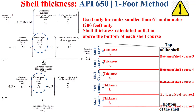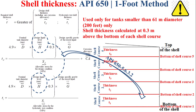The design liquid level h is the height from the bottom of the considered shell course to the top of the shell, so this design liquid level will vary depending on the considered shell course. For example, to determine the thickness t1 for shell course 1, we use h1, which is the height from the bottom of shell course 1 to the top of the shell, to determine td1 and tt1.